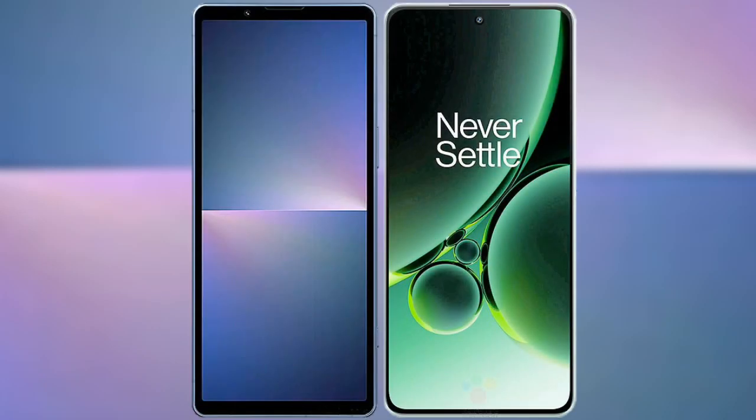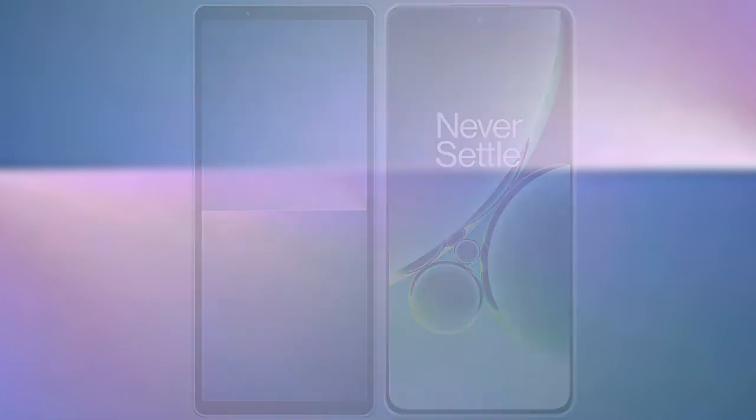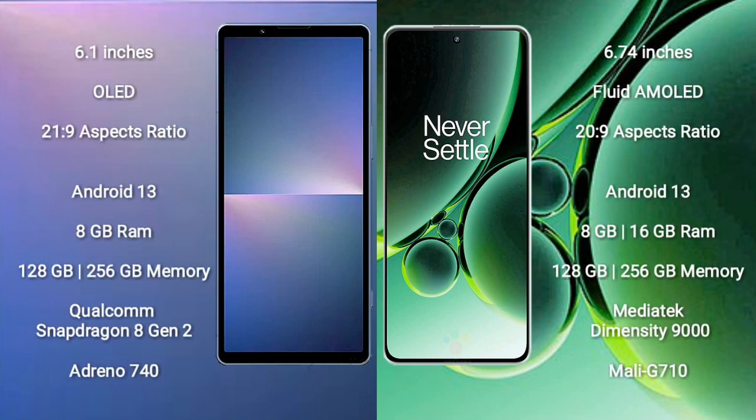I will compare the new Sony Xperia 5 Mark 5 with OnePlus Nord 3. Sony Xperia 5 Mark 5 comes with a 6.1 inches OLED display and aspect ratio 21:9. OnePlus Nord 3 comes with a 6.74 inches flat AMOLED display and aspect ratio 20:9.